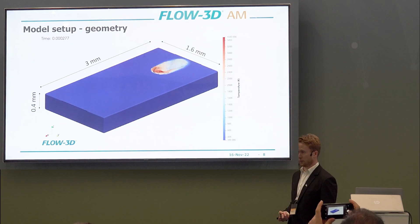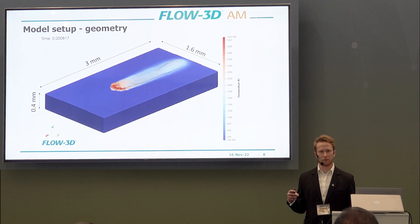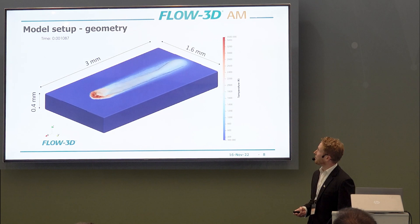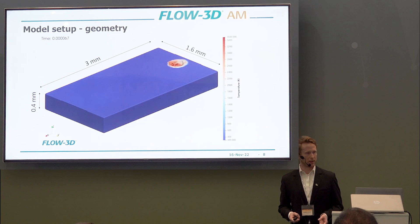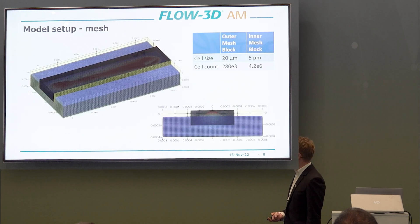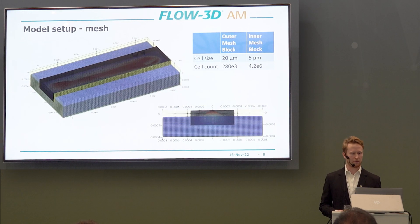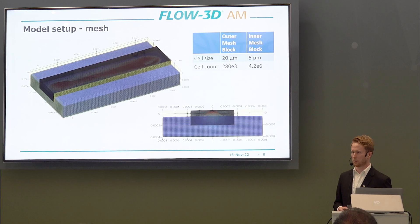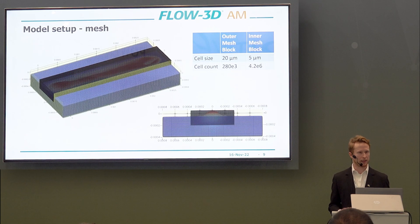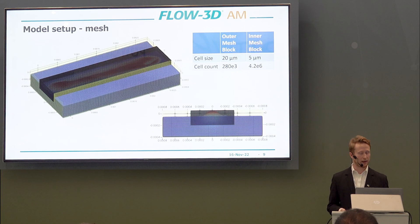In this current project, the model geometry was a flat plate of three millimeters length — with the remaining dimensions set so that boundaries are far enough from the melt pool to not influence the solution. I used two mesh blocks: one in the vicinity of the melt pool with a cell size of five microns, and an outer mesh block for simulating heat diffusion with a cell size of 20 microns. This resulted in around 4.5 million cells, yielding a simulation time of around 10 hours on a 10-core machine.